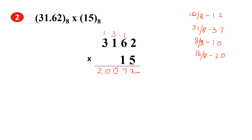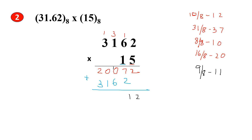Next, multiply 1 with 3162. 1 into 2 is 2, 1 into 6 is 6, 1 into 1 is 1, 1 into 3 is 3. Now add these two partial products. You get 2 here. Then 7 plus 2 is 9. 9 is not an octal number, so divide by 8 — quotient is 1 and remainder is 1. Put 1 here and 1 as the carry. Then 1 plus 0 plus 6 is 7. Then 0 plus 1 is 1. 2 plus 3 is 5.